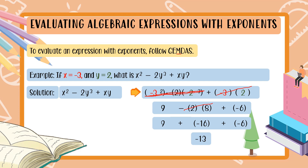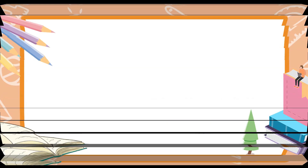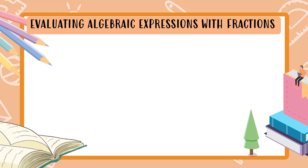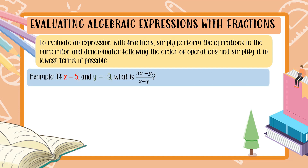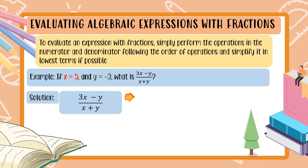For the last part — the fourth one — how do we evaluate algebraic expressions with fractions? To evaluate an expression with fractions, simply perform the operations in the numerator and denominator following the order of operations, and simplify to the lowest term if possible. Example: if x is equal to 5 and y is equal to negative 3, what is 3x minus y all over x plus y?